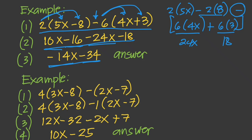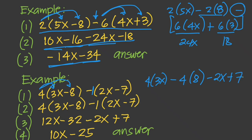Another similar example: 4 times (3x minus 8) minus (negative 2x plus 7). We distribute 4 and treat the negative sign as negative 1. 4 times 3x equals 12x, and 4 times 8 equals 32. Then distributing negative 1: negative 2x and 7 become part of the expression. Our simplified result is 12x minus 32, combined with the remaining terms.